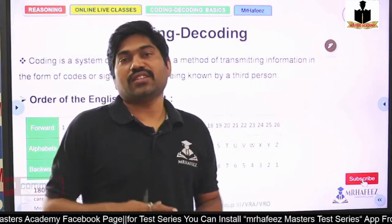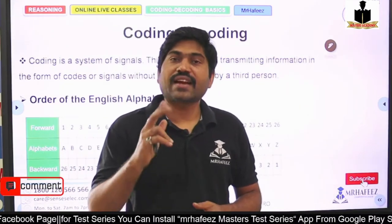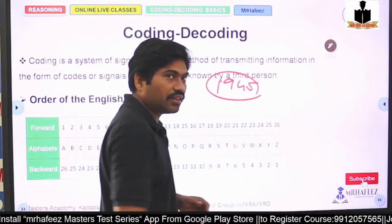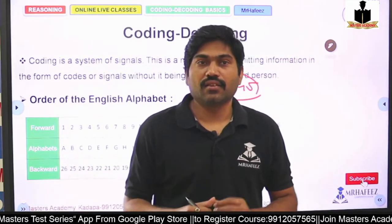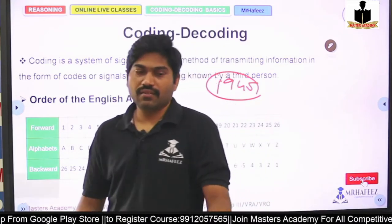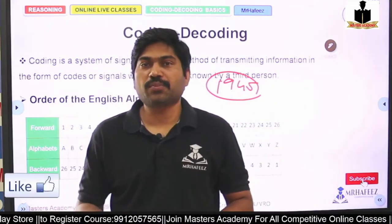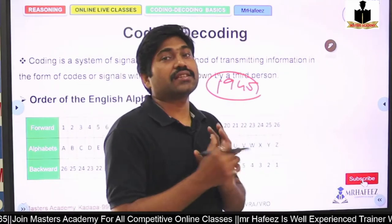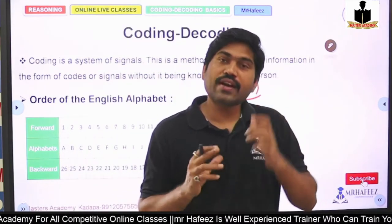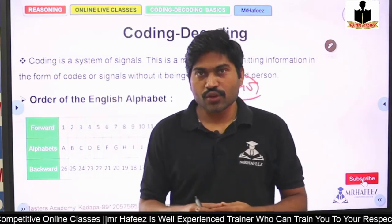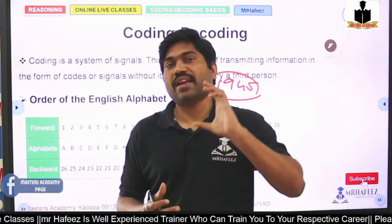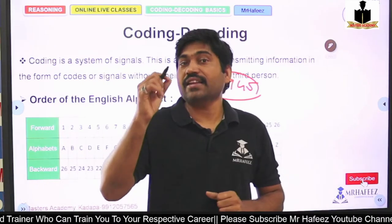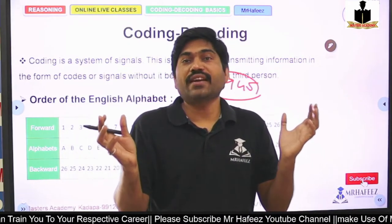Let's understand where this concept of coding came from. During the Second World War — around 1945 — soldiers needed to transmit data. If they transmitted data directly, it was easy to hack. So soldiers used a cipher, which is essentially coding. They would convert a message into a coded message before transmitting it, so enemies could not understand it.